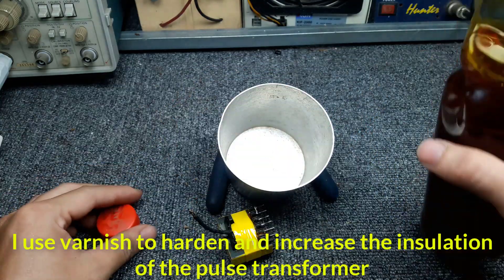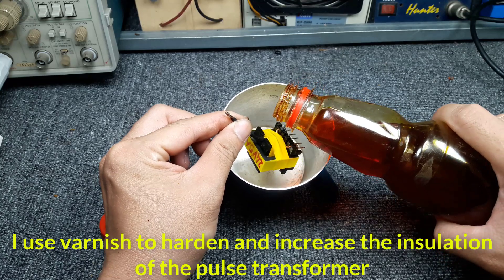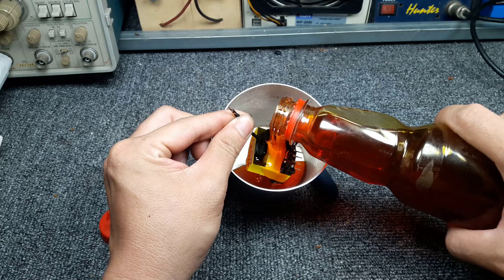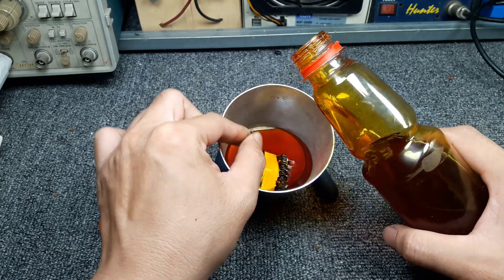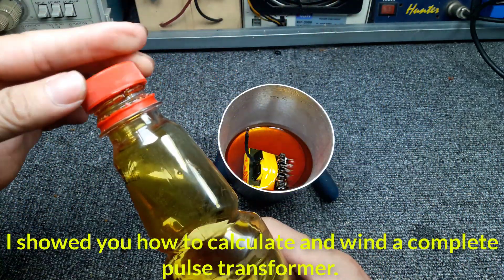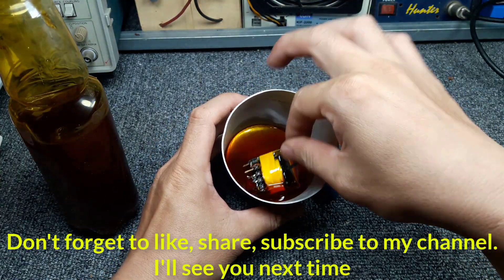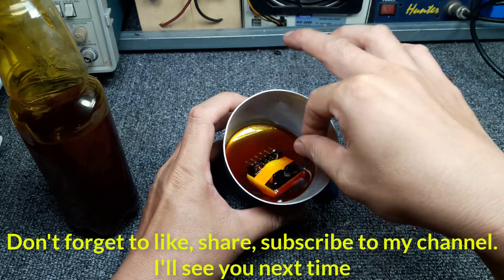I use varnish to harden and increase the insulation of the pulse transformer. I showed you how to calculate and wind a complete pulse transformer. Don't forget to like, share, subscribe to my channel. I'll see you next time.